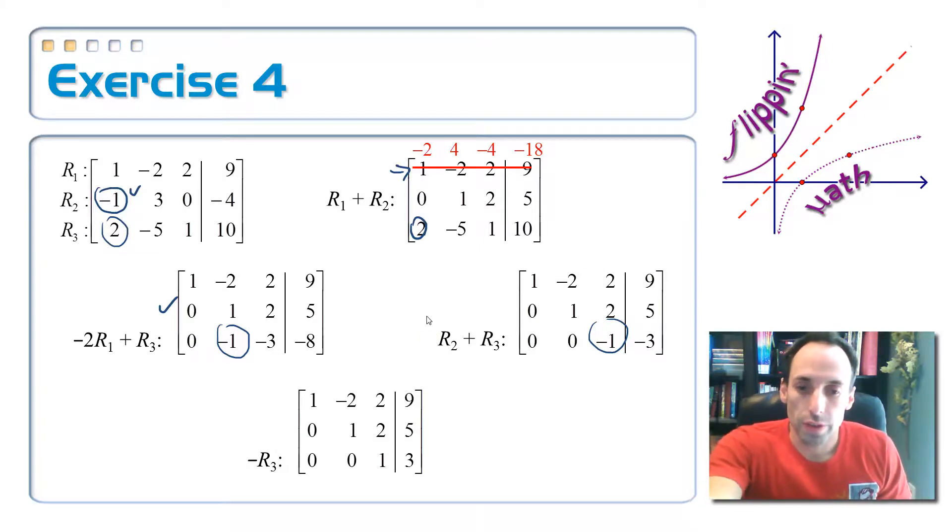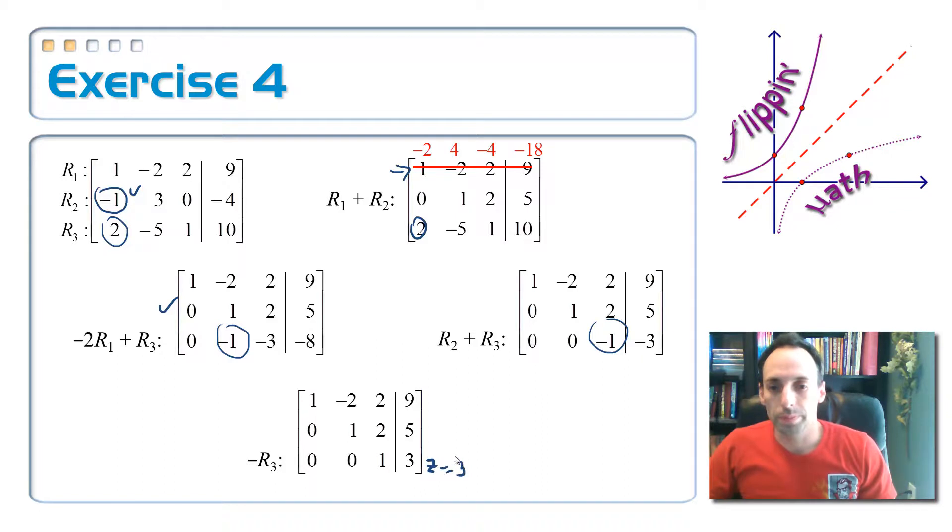Okay? So, I could solve it then by going here, z is equal to 3. That's what I'm getting from that bottom row. From the next row, this means 1y plus 2 times z, which is 2 times 3 from the bottom equation, is equal to 5. That's 6. Subtract it over. Y is equal to negative 1.